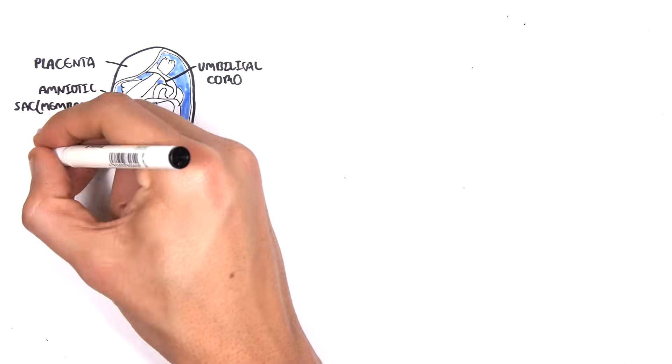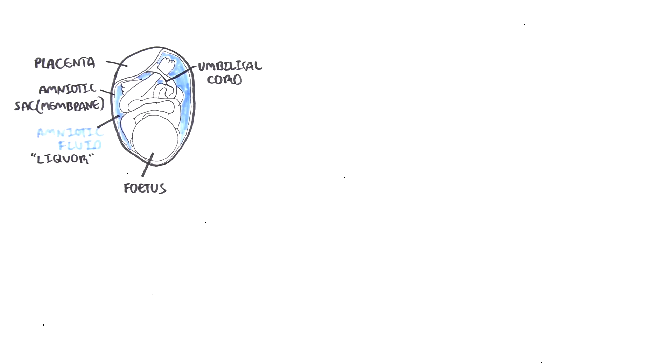A comment about the amniotic fluid. Initially the placenta actually makes the amniotic fluid, but after a while the fetus actually takes over and basically the fetus is peeing out stuff and this becomes the amniotic fluid. And the fetus also swallows this fluid again back to the lungs.